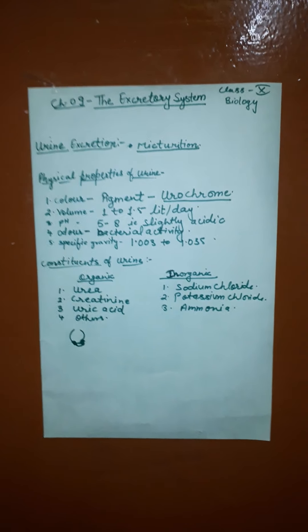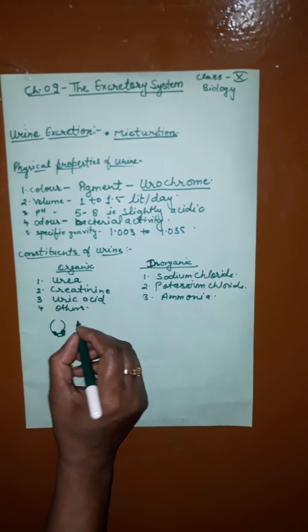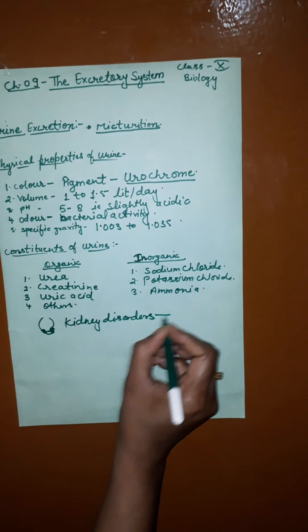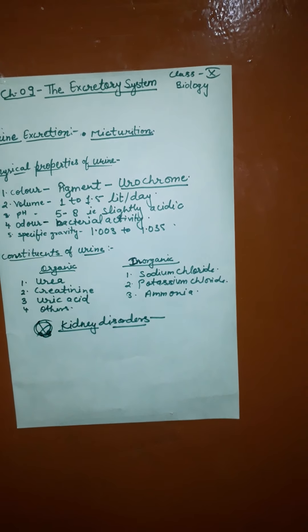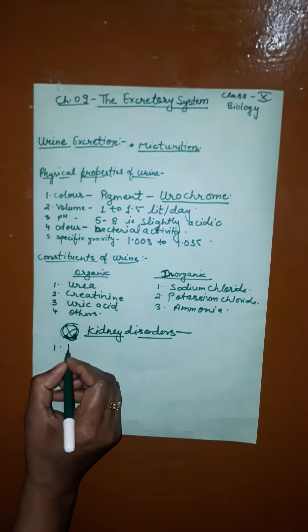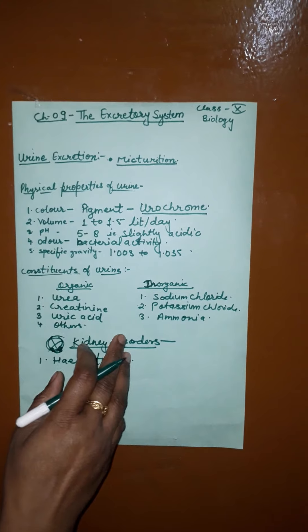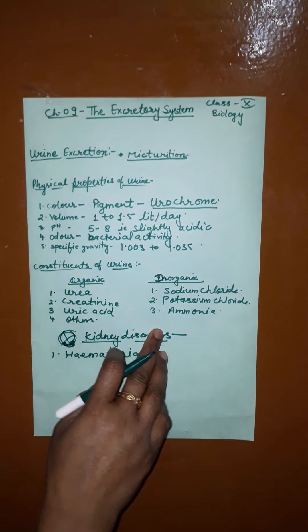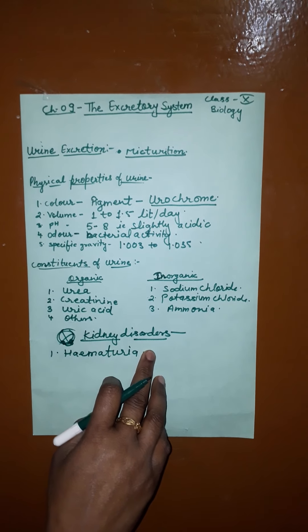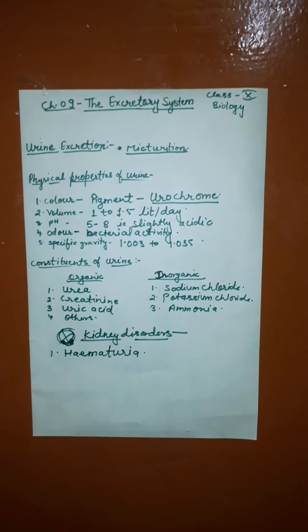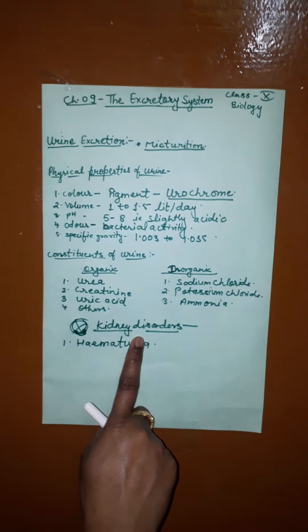Now, abnormalities or kidney disorders. The first is hematuria, in which blood is passed out along with urine. It is mainly due to infection in the urinary tract, kidney stone, or tumor.